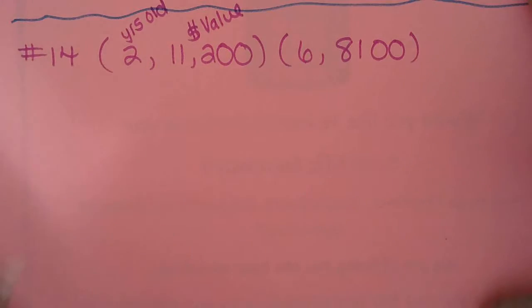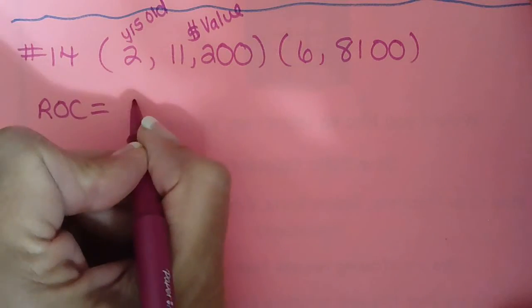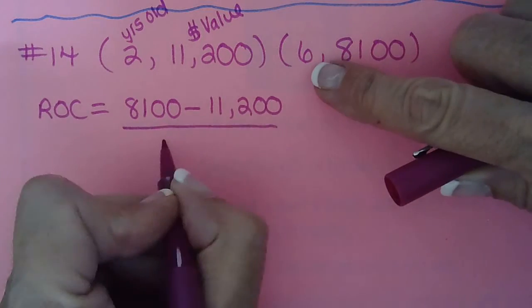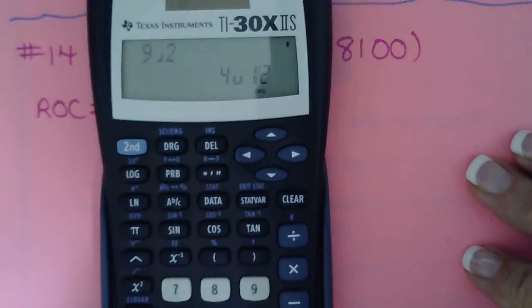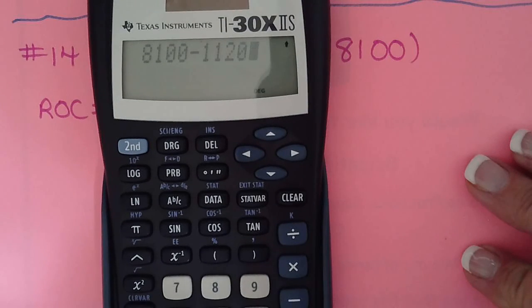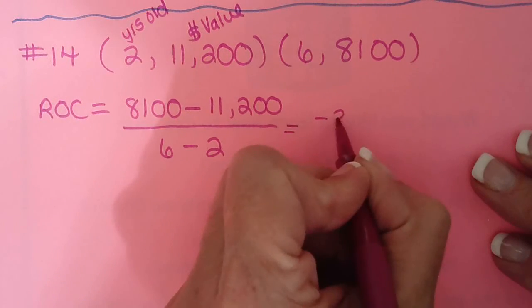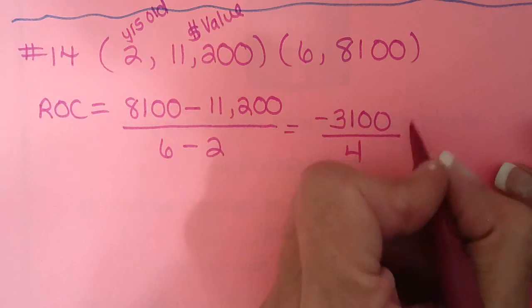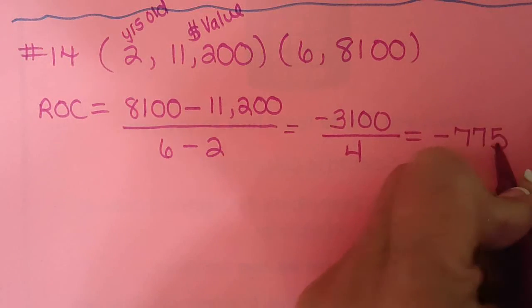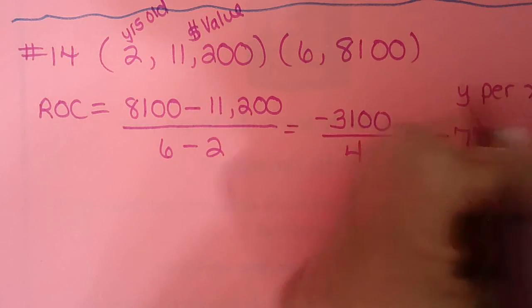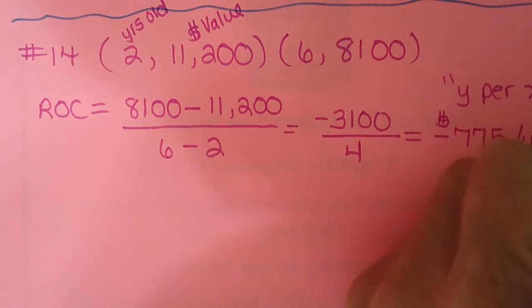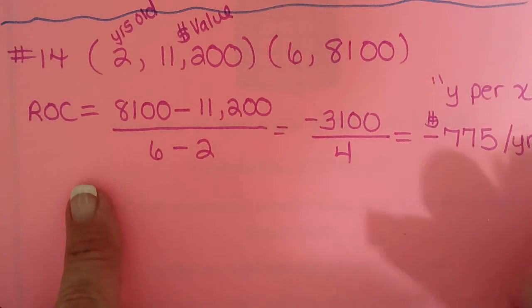So number 14, 2, $11,200, 6, $8,100. And this was years old, and this was dollars value. Okay, so now we're ready to do our slope. So rate of change equals 2nd y, 8,100 minus the 1st y, 11,200 over 2nd x, 6 minus the 1st x, 2. So 8,100 minus 11,200, negative 3,100 over 4, so divide by 4, negative 775. And it's y per x, so that would be dollars per year. So since we're going to run out of time, I'm just going to say this sentence out loud. J. Lynn's car is losing.